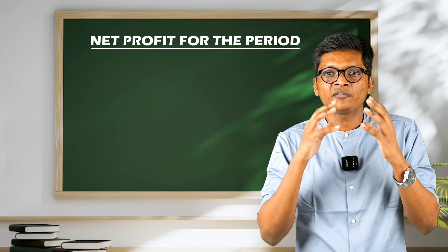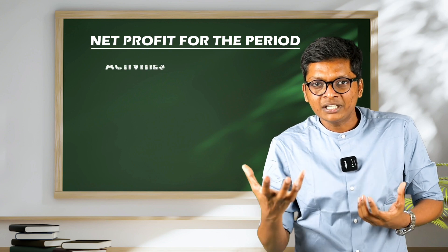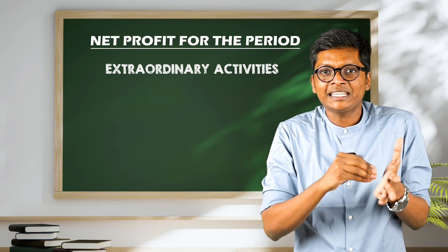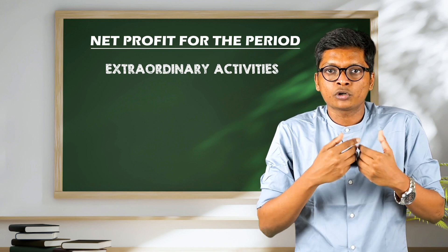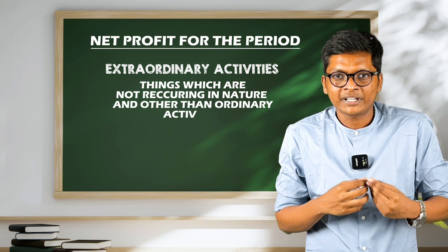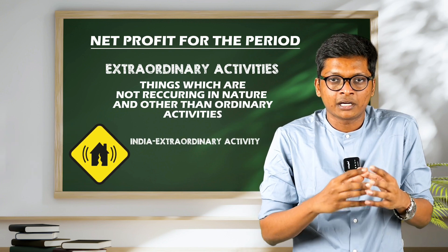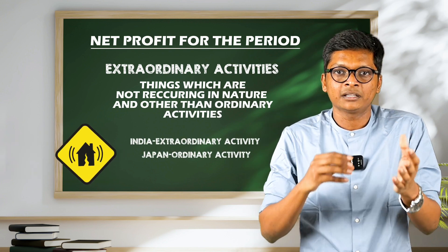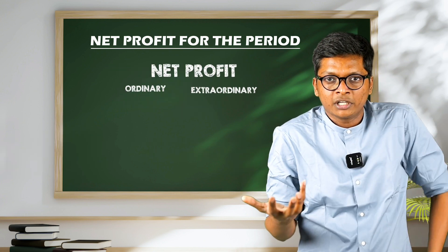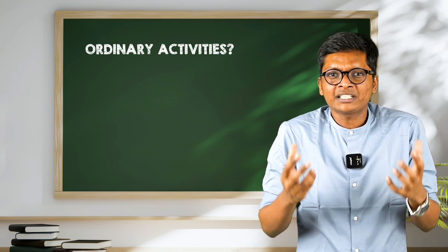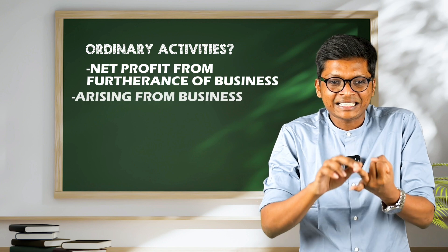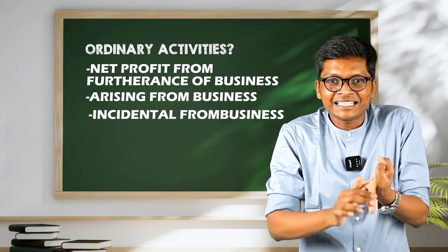Lastly, coming to net profit for the period. Net profit comes because of ordinary activities and extraordinary activities. The standard defines extraordinary activities as things which are non-recurring in nature and other than ordinary activities. For example, an earthquake is an extraordinary activity for India but not for a country like Japan. Net profit can come from ordinary or extraordinary activities. Most of the transactions come under ordinary activities — net profit from furtherance of business, arising from business, and incidental to business.